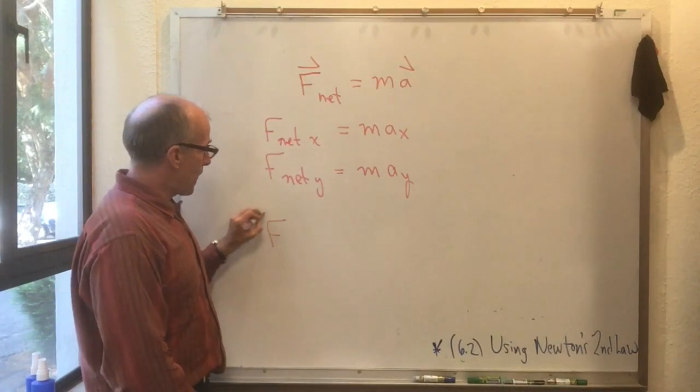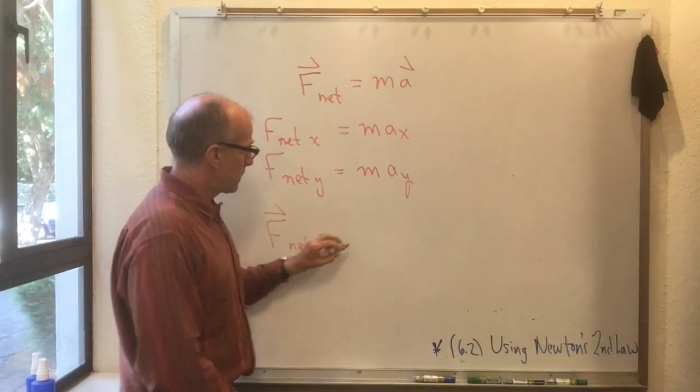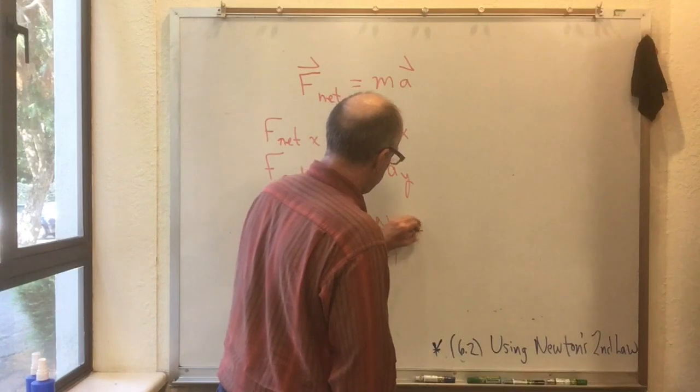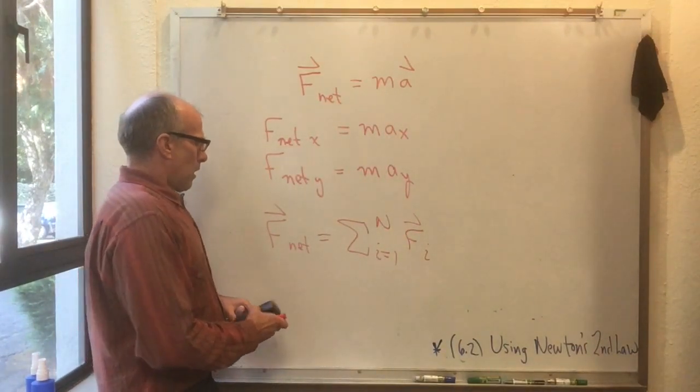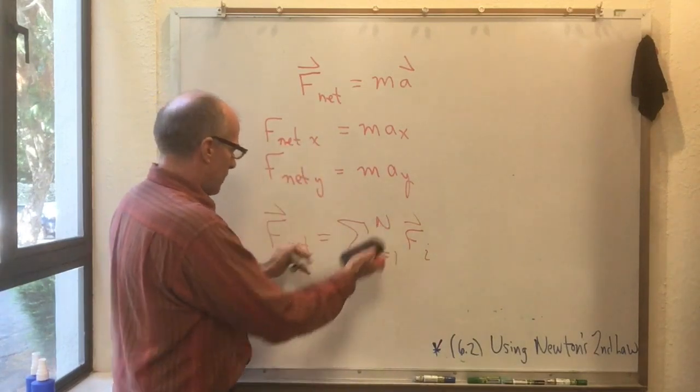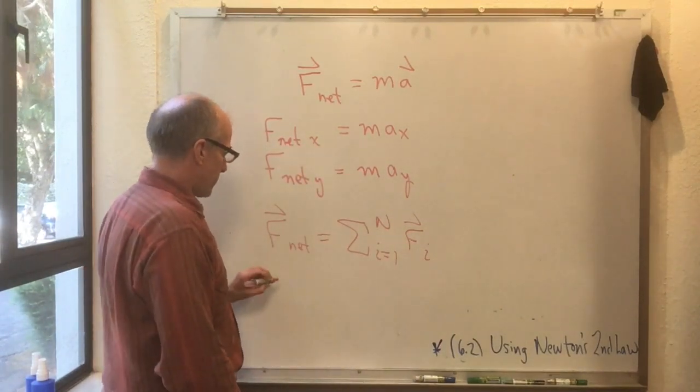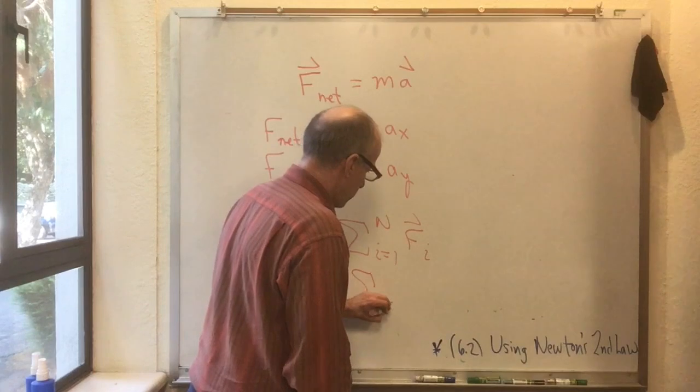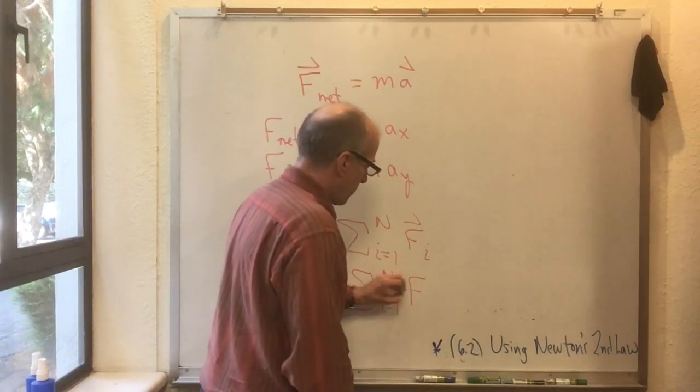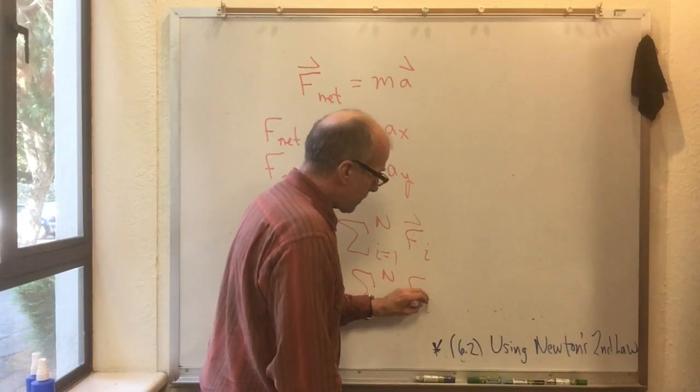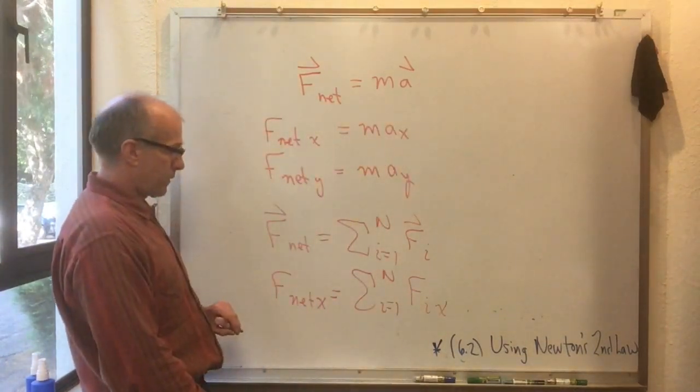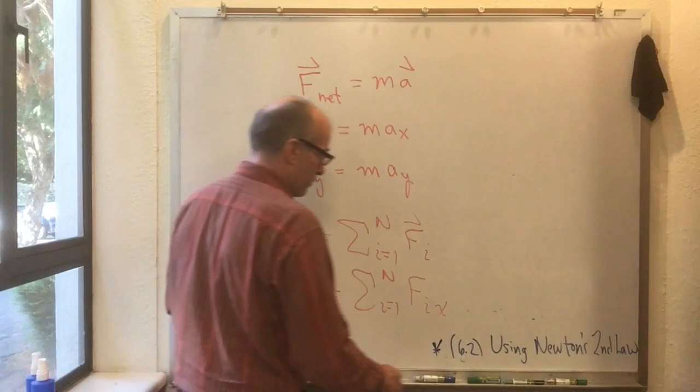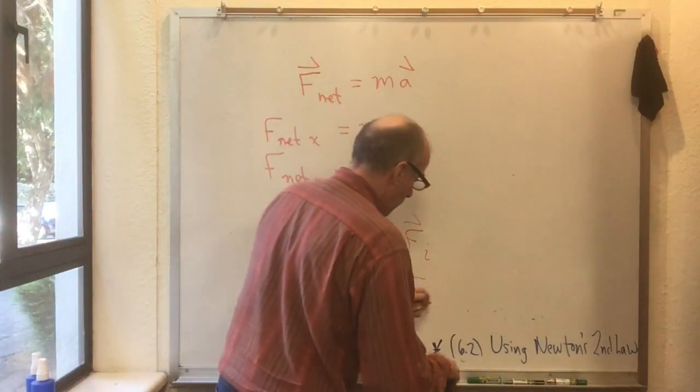Well we're not quite done on using Newton's second law because this F net X is a bit of a mess itself. Remember that F net is the sum of all the forces on a particle so that's sum I equals 1 to N of F sub I. So what's F net X? Well this itself is also a vector equation so F net X is the sum I equals 1 to N of the i-th force's X component. And of course F net Y is the sum I equals 1 to N of the i-th force's Y component.